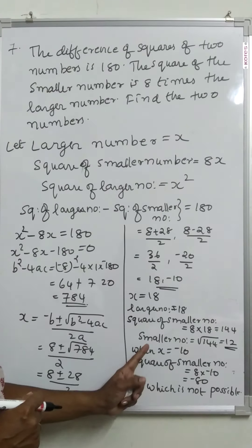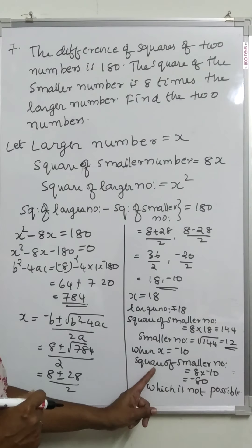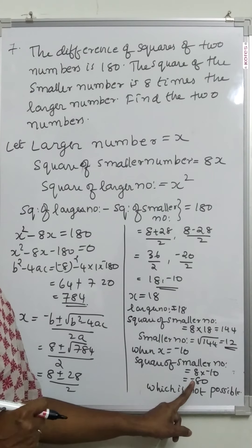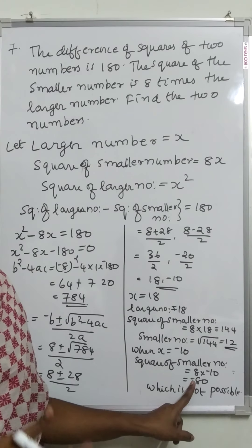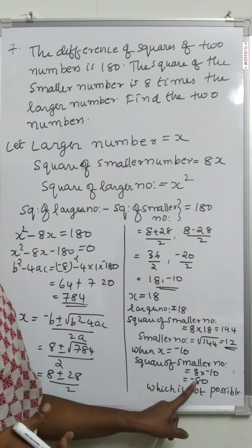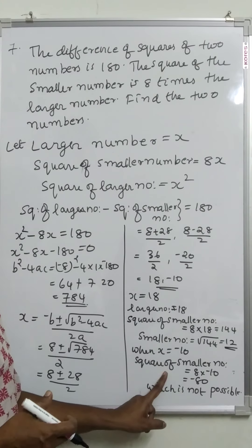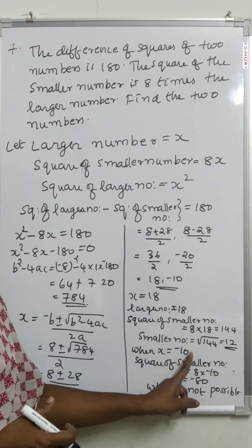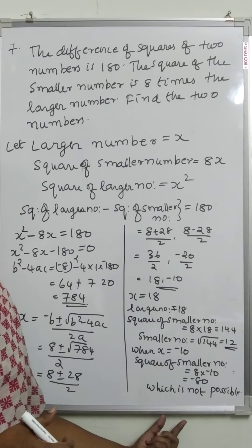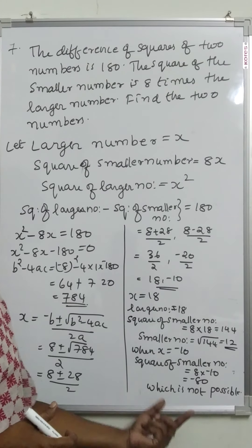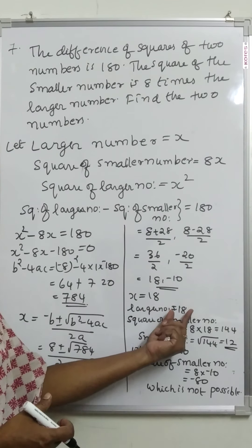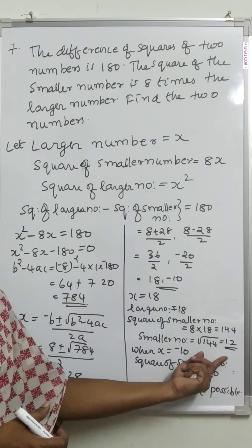The second case gives x equal to minus 10, then the square of the smaller number would be 8 into minus 10 equals minus 80, which is not possible. Therefore x equal to minus 10 is rejected. Hence x is equal to 18, the larger number is 18 and the smaller number is 12.